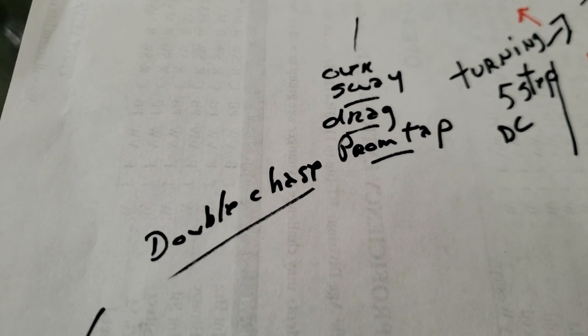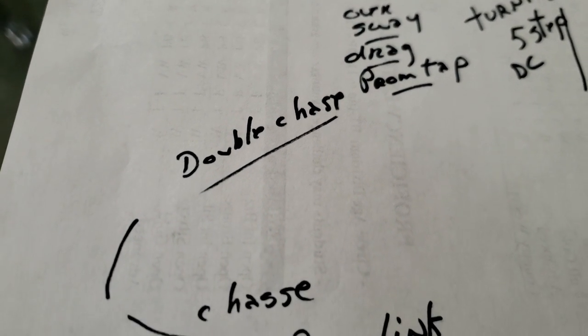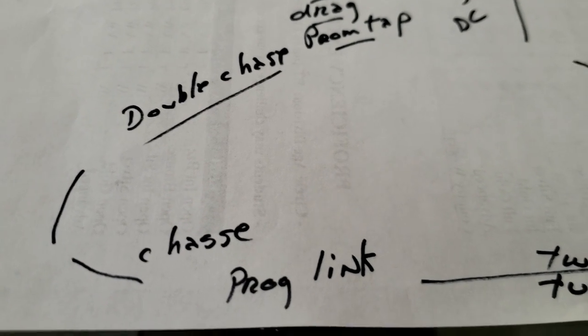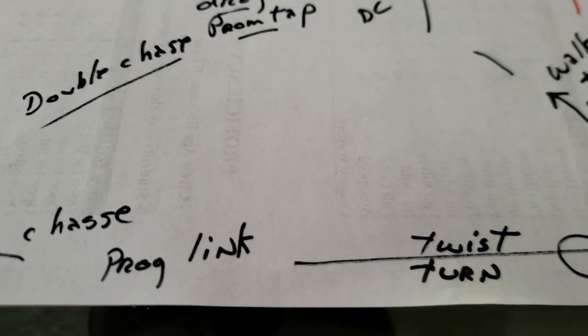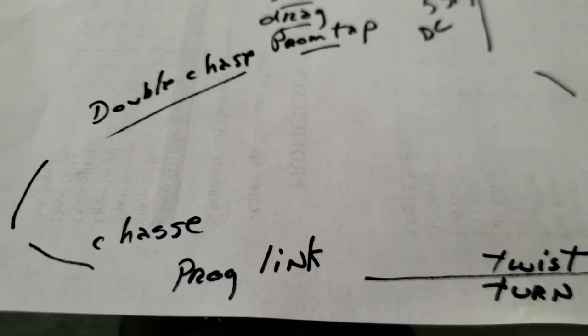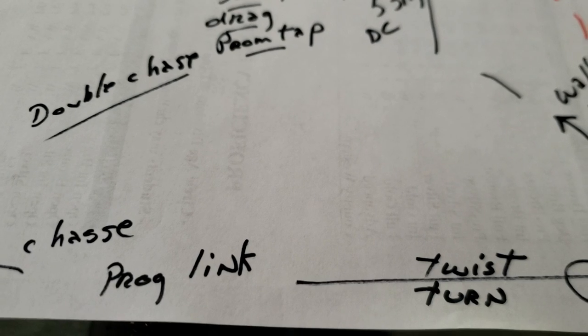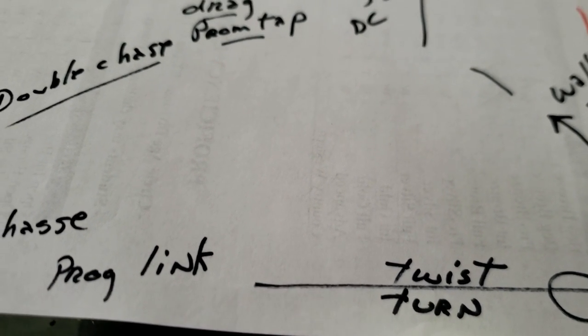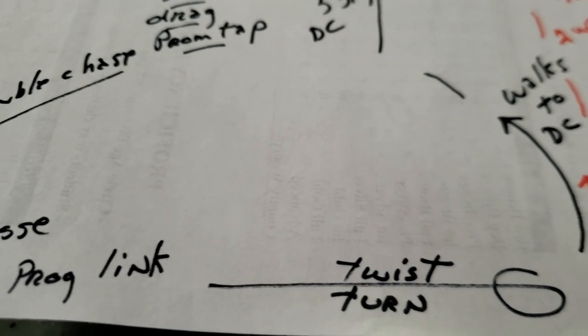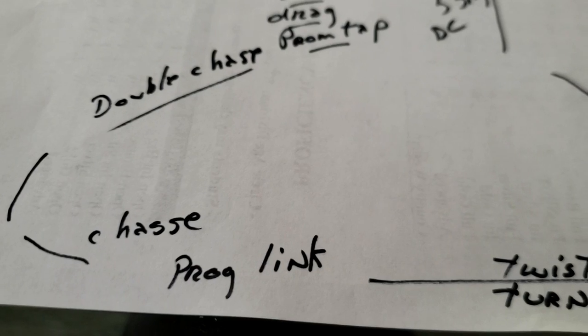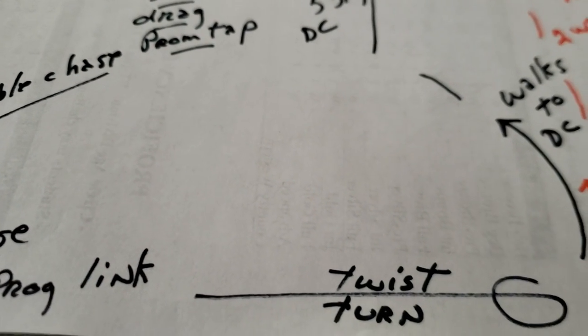And then you can see here where the chase, the double chase takes you into and around the corner, ending with the chasse and progressive link. Now you'll have to check your alignments on this to see if you are able to get the progressive link in the right alignment. Because we should finish diagonal wall and the short wall in order to do the twist turn. And I think in the space you have there I don't think you need anything else on that short wall.